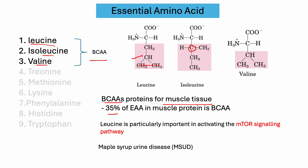Around 35% of the essential amino acids contributing to muscle protein tissue come from branched-chain amino acids. Among these three, leucine is very important because it can activate the mTOR signaling pathway. mTOR stands for mammalian target of rapamycin, and this mTOR protein kinase is very important for protein synthesis and cell growth. Isoleucine and valine also have another function: blood sugar control and energy production.